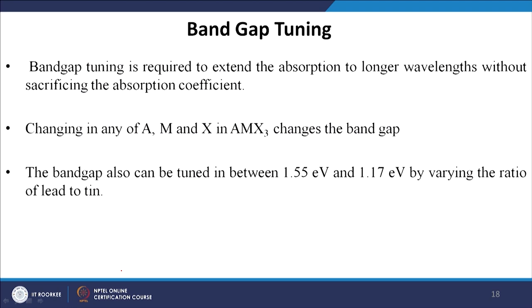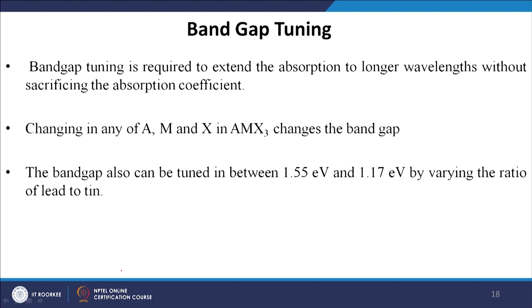One of the advantages of perovskite material is band gap tuning. Band gap tuning is required to extend absorption to longer wavelengths without sacrificing the absorption coefficient. Changing any of the A, M, and X in the AMX3 structure changes the band gap. Either changing the A cation, or M, or X can change the band gap, because changing these components changes the tolerance factor T. If the tolerance factor changes, there is a distortion in the crystal structure, leading to a different crystal geometry and hence different band gaps.